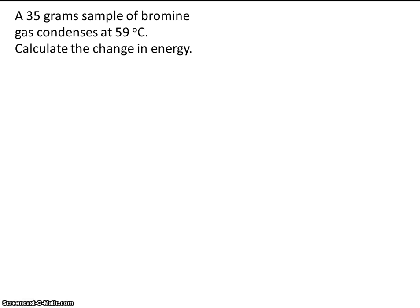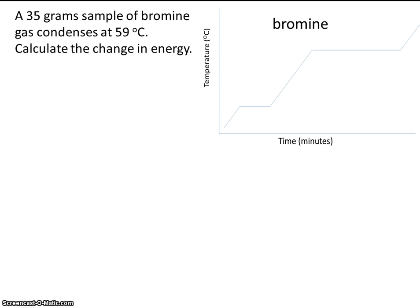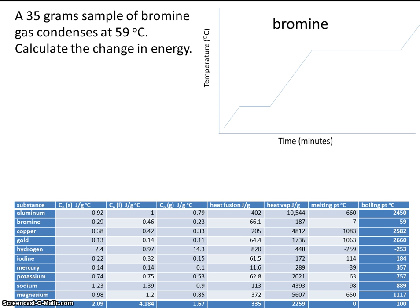So like always, we'll start with our heating and cooling curve. You'll have to look at your table to figure out what the melting point and boiling point is. There's bromine — its melting point is 7 degrees C, so let's write that on the chart. And its boiling point is 59 degrees, so we'll put that on the graph as well.